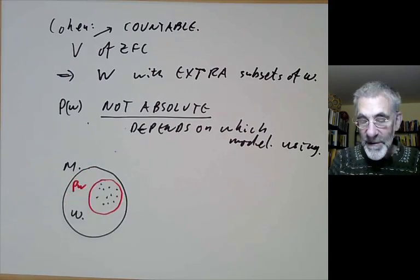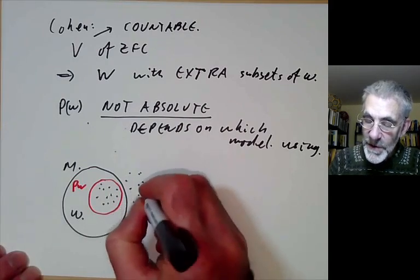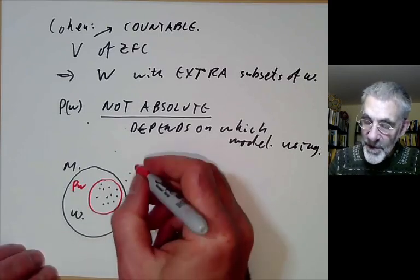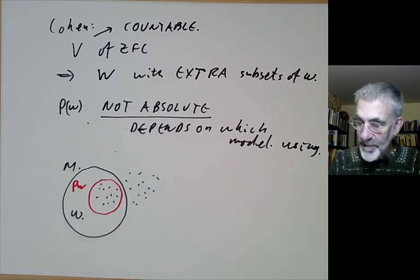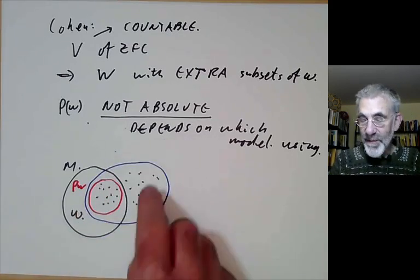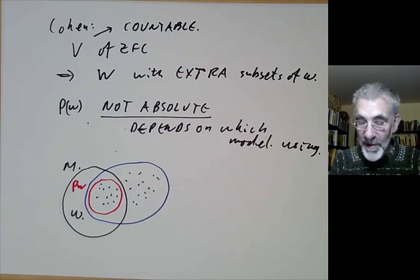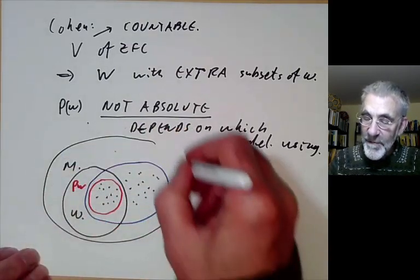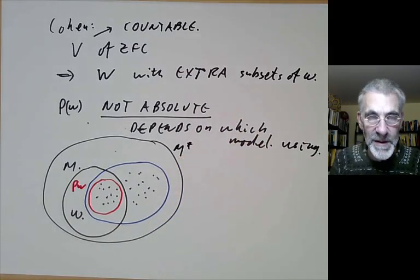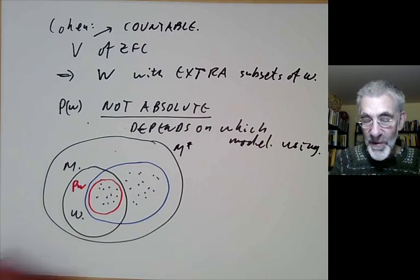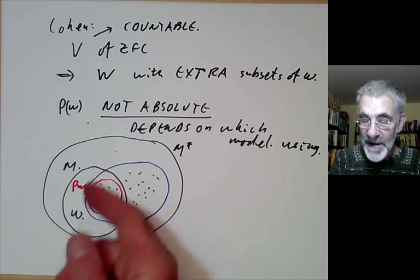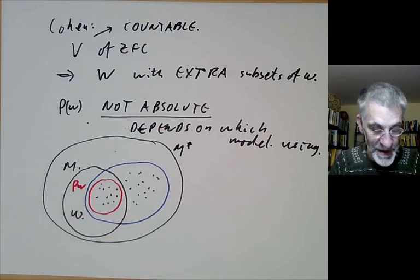However someone living outside the model can see there are more subsets of omega which aren't actually in the model and so they think that the power set of omega is this bigger set here. So you know if the person and the person living outside the model might be living inside an even bigger model say M star and there might be someone living outside that even bigger model and so on. So you might have a whole hierarchy of universes and all these universes have different ideas of what the power set of omega actually is.